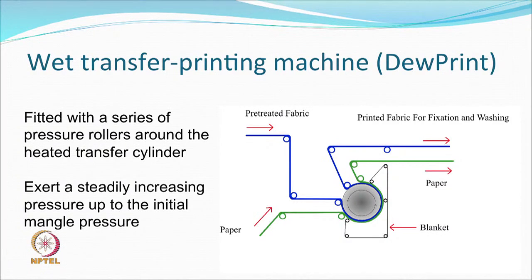A wet transfer was not very successful until this machine was brought into the market. The people who became more interested ultimately were the wool people. There is a good research institute in Australia, and of course nice work being done in the UK on wool. They were obviously quite interested in doing wet transfer printing of wool. Wool in any case has a relatively much rougher surface compared to any other surface, but it was an attractive process and people wanted to work around it.